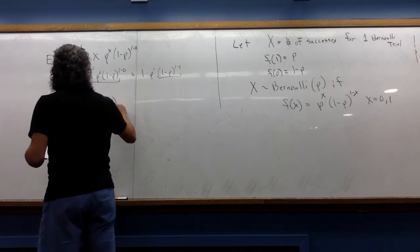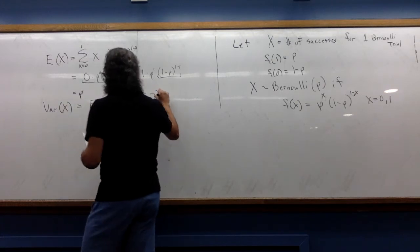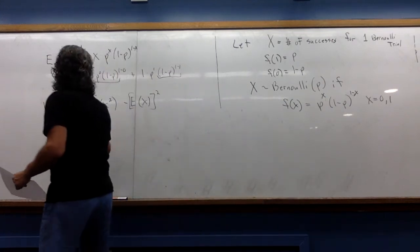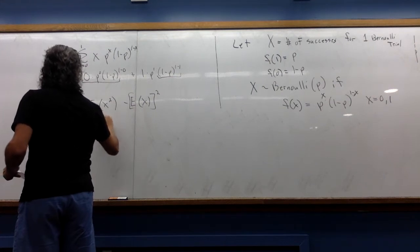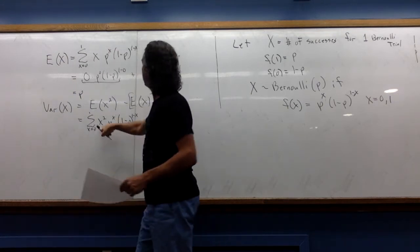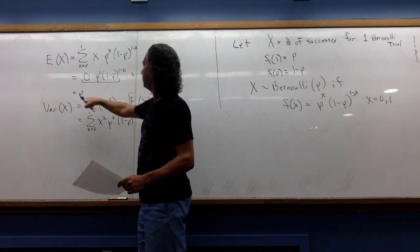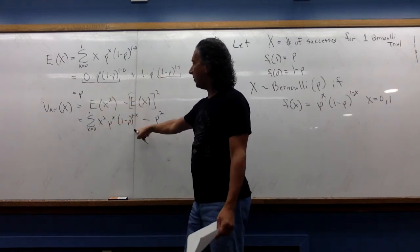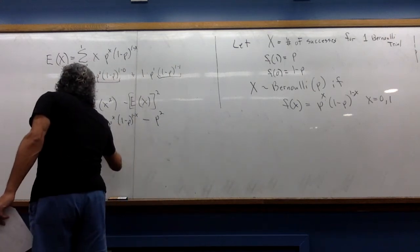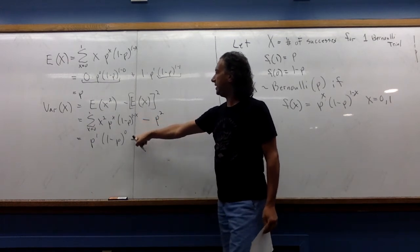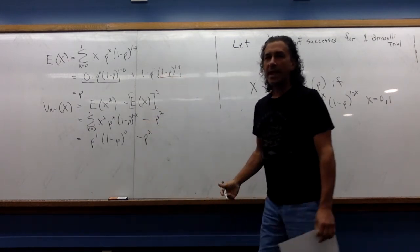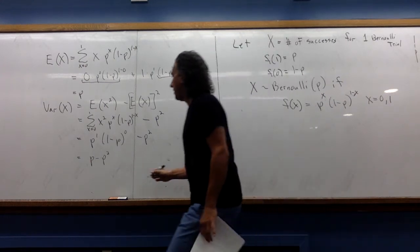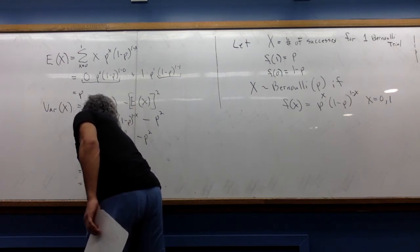Now let's find the variance of X using the nicer formula: E[X²] minus (E[X])². The expected value of X² means we do the same computation but with x² instead of x. Since the x=0 term zeros out, we just plug in x=1: p^1 times (1-p)^0 equals p, minus p squared. That gives us p minus p², which we typically write as p(1-p) or pq.